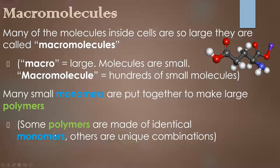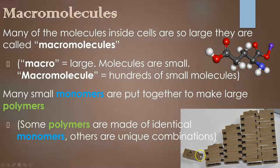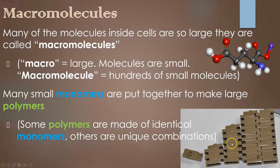Some polymers are made up of identical monomers, others are unique combinations. A Lego wall is a polymer — it's made up of many parts, but it's the exact same monomer repeated again and again. Others, like all those Lego structures, are unique — they don't necessarily repeat and use lots of different monomers built together.